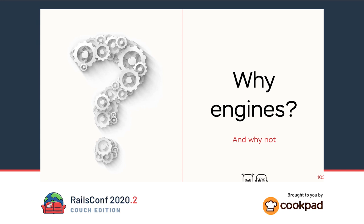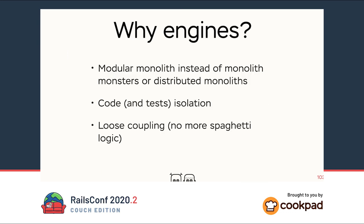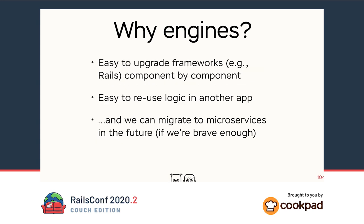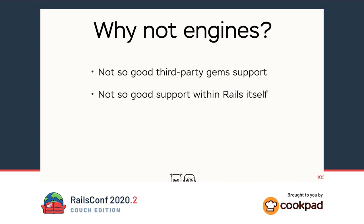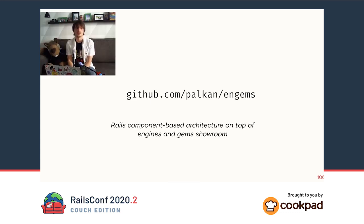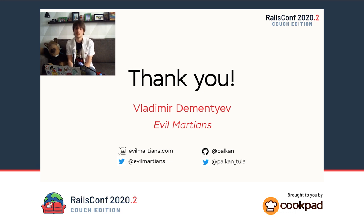That was a quick overview of the engines and gems architecture. We only covered half the map I showed, but hopefully you got the idea and I demonstrated some solutions to the problems. Should you use engines for your monoliths? There are a lot of benefits — and one is that you can extract engines into microservices in the future if you need to. The problem with engines is that third-party gems usually lack support for them, and even Rails is not great with engine support. Here's a link to resources, scripts, and other useful materials from this talk. Feel free to use it. And thank you — just don't let your monolith become a monster.